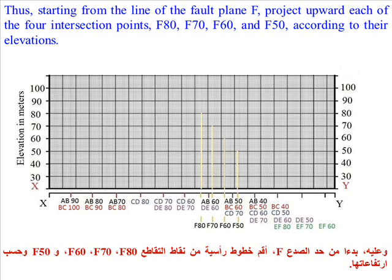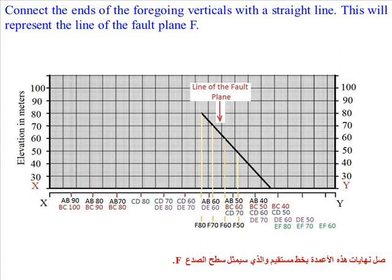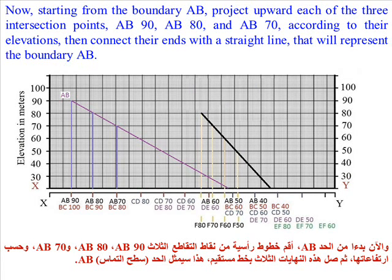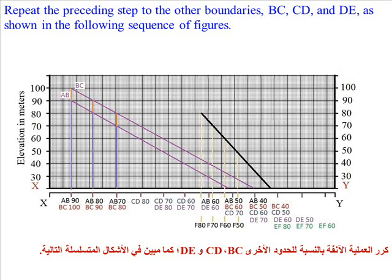Starting from the fault plane line F, project upward the four intersection points F80, F70, F60, and F50 according to their elevations, then connect their ends with a straight line to represent the fault plane. For boundary AB, project upward the three points AB90, AB80, and AB70 according to their elevations and connect their ends with a straight line to represent boundary AB. Repeat this step for boundaries BC, CD, and DE in the northern set.